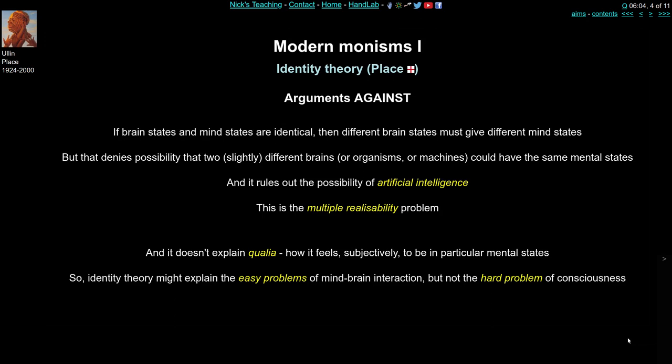A second major problem with identity theory is that it doesn't explain qualia. Qualia is the qualitative aspect of experience — how it feels subjectively to be a bat, to see red, or to be in love. Qualia are used to argue against almost every monist materialist position on the mind-body problem. This is essentially the hard problem of consciousness: while identity theory may explain the easy problems of mind-brain interaction, such as why alcohol makes you feel less inhibited, the hard problem — why we have subjective qualitative states — is not explained by identity theory.